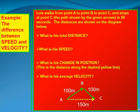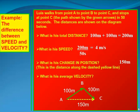Speed equals distance divided by time: total distance is 200 meters in 50 seconds, so his speed is 4 meters per second. His change in position — displacement — is the distance along the dashed yellow line. He did not walk that path, but that's how far he ended up from where he started. His average velocity is 150 meters divided by 50 seconds, which equals 3 meters per second. In this case, speed and velocity are different. Change in position is also called displacement, and that is the term we will use most often in this class.